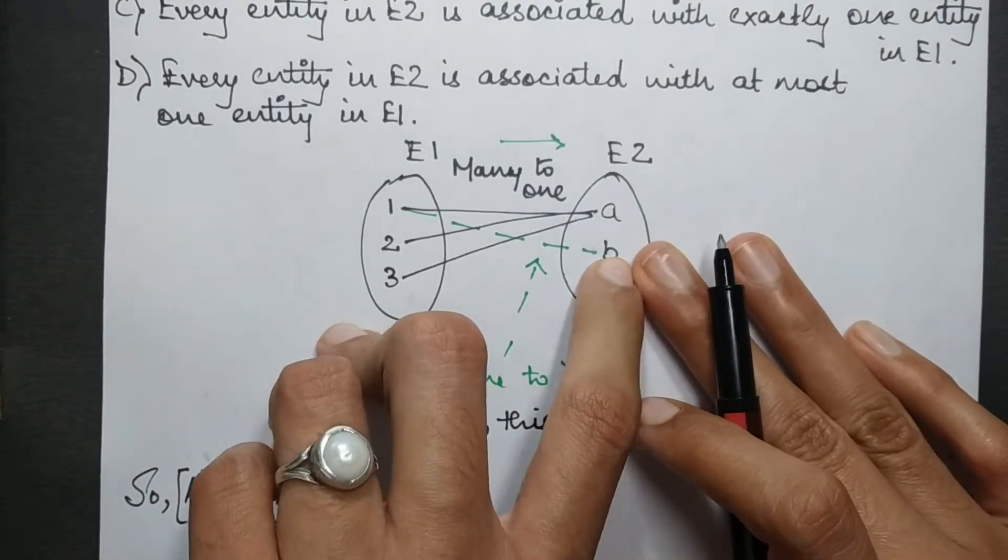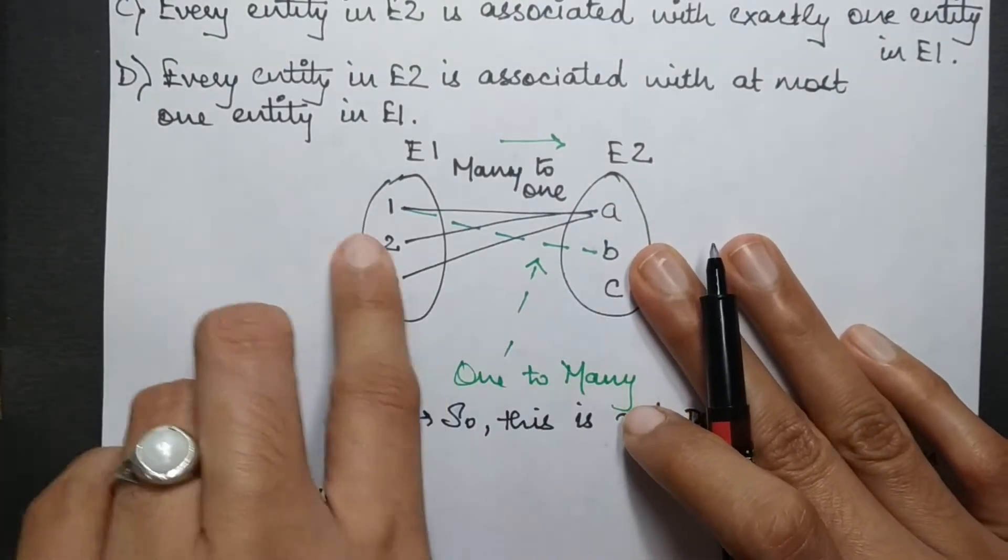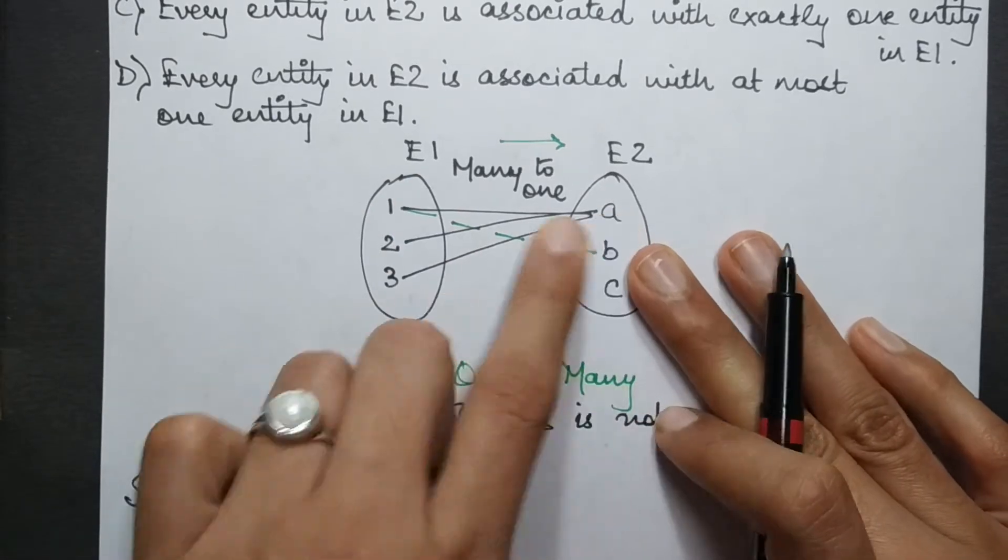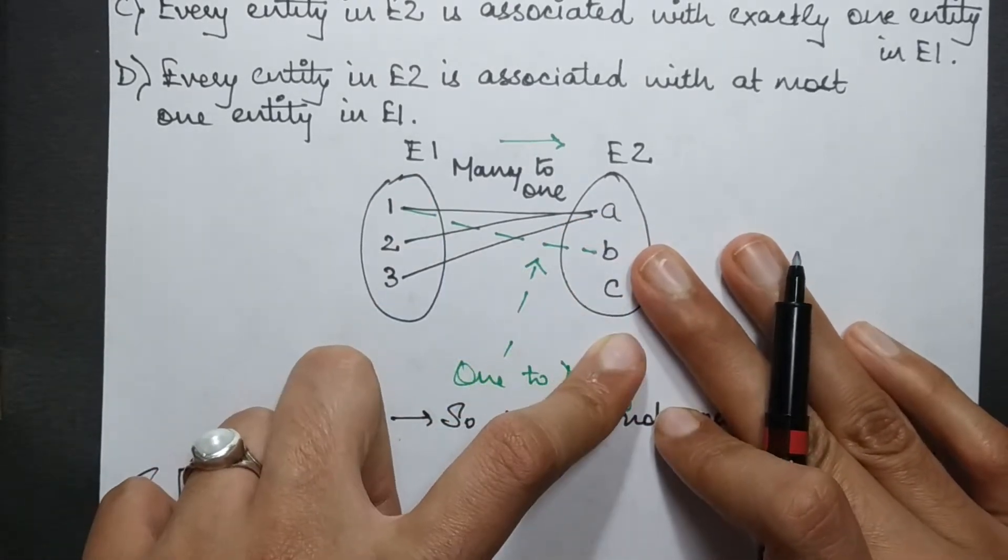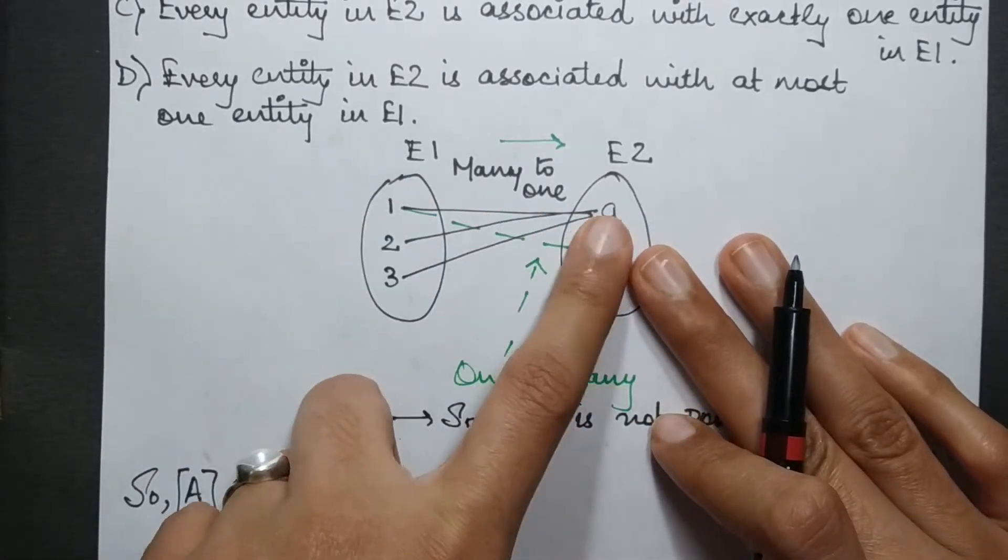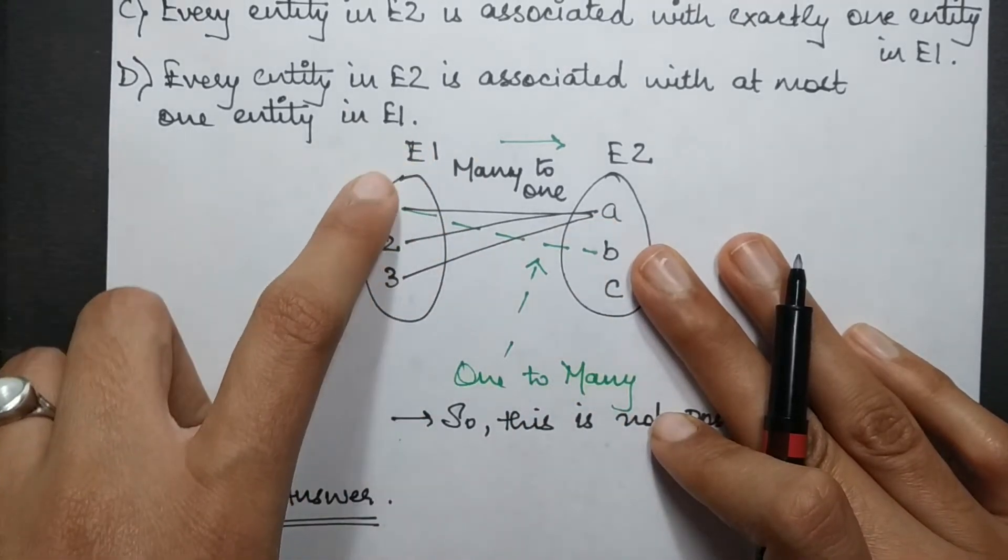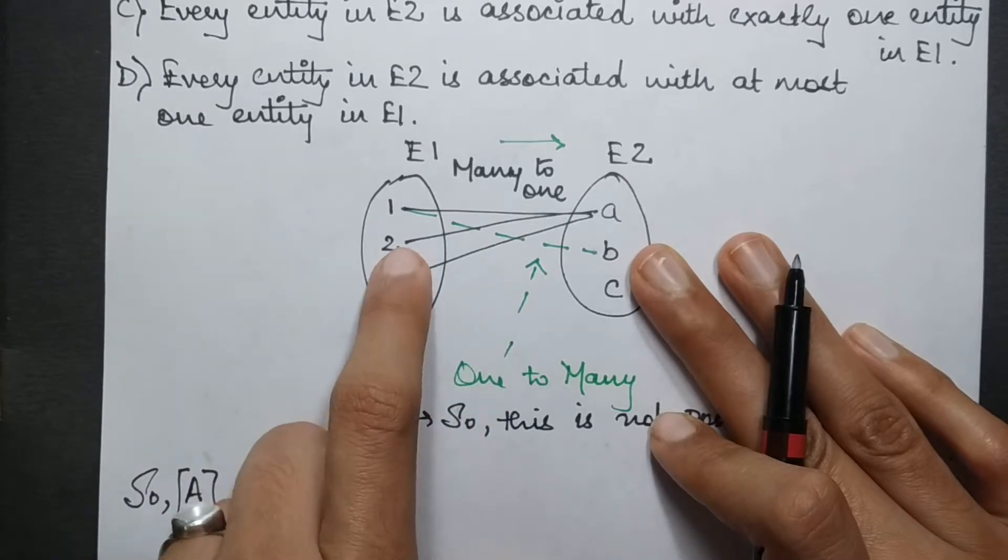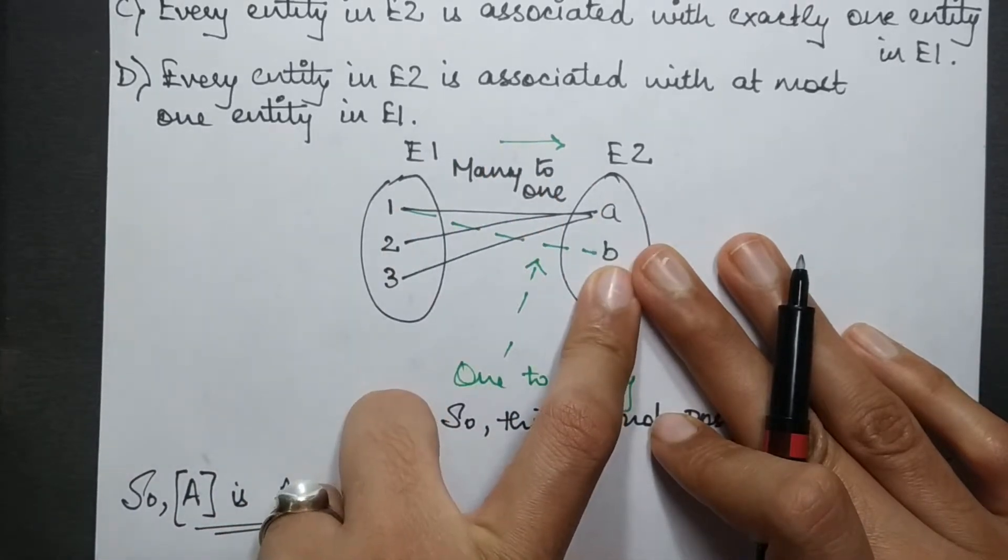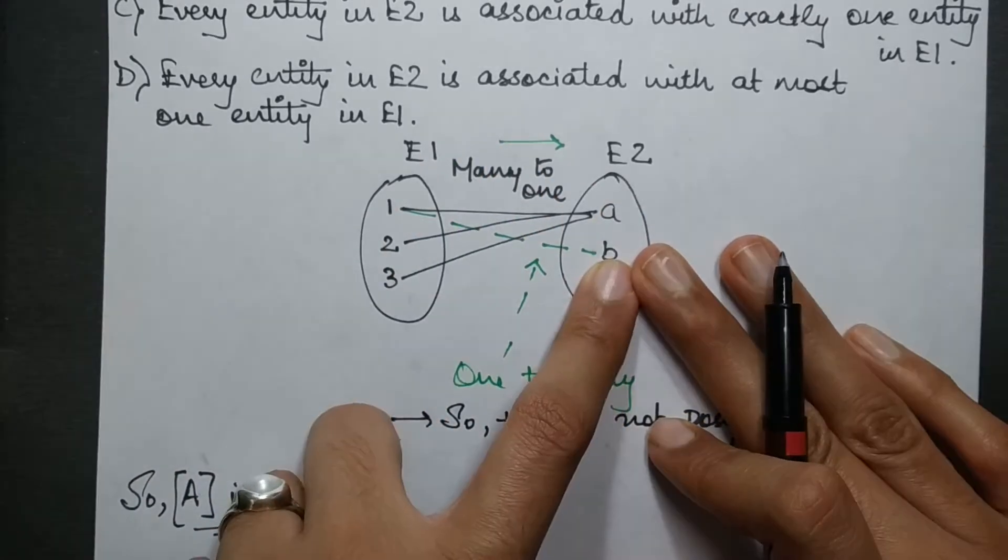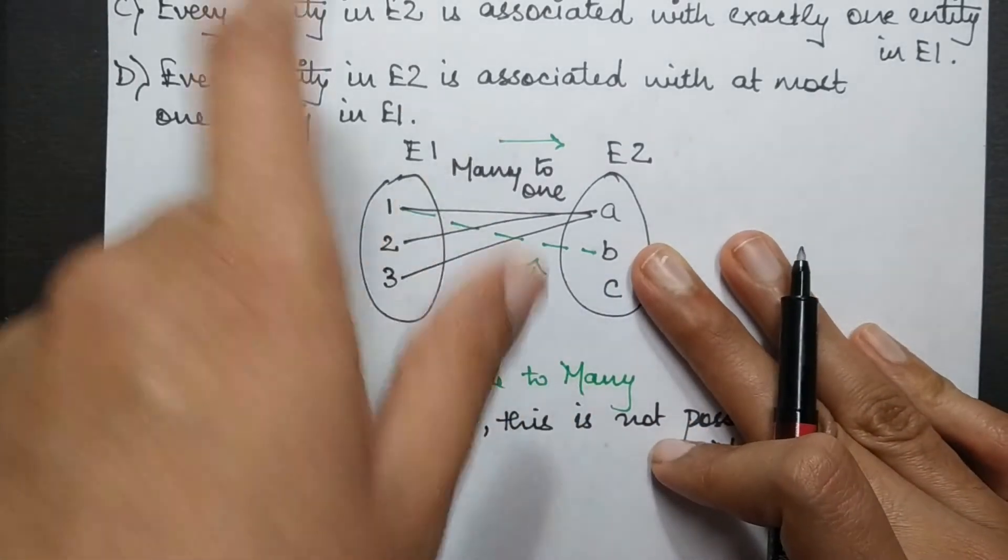So with this restriction we know that now if one is mapped with A it cannot be mapped with any other element. Similarly if 2 is mapped with A it cannot be mapped with any other element. That means every element of this is mapped to a unique element of this. Right? So now let's check this fact with the given options.